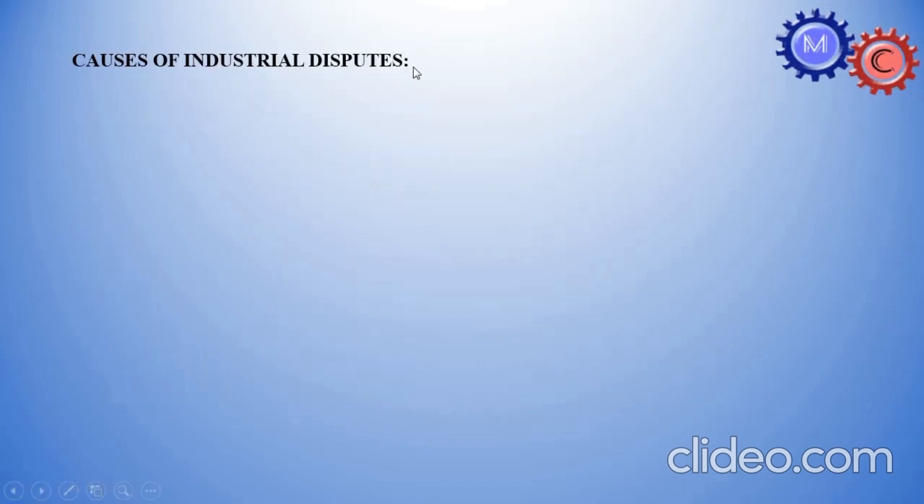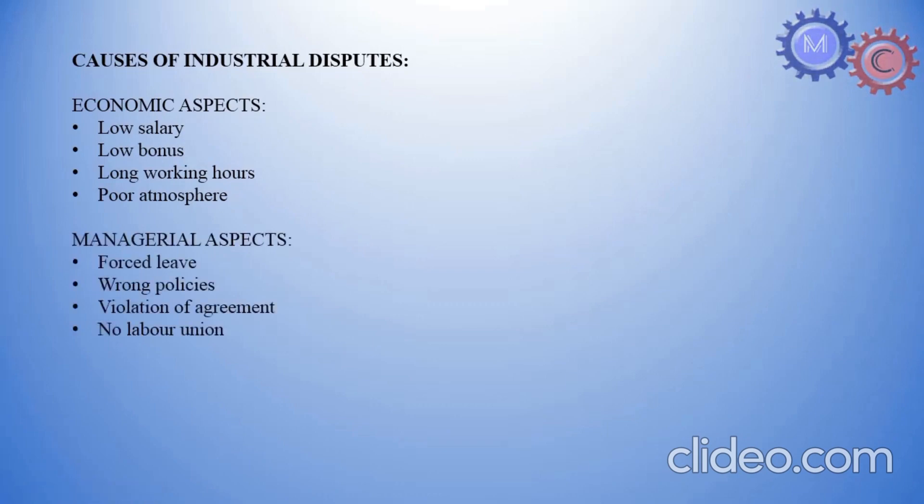Causes of industrial disputes. How industrial disputes occurs? Economic aspects: low salary, low bonus, long working hours, poor atmosphere. Managerial aspects: forced leave, wrong policies, violation of agreement, no labor union. Psychological aspects: strict discipline, ego clashes. It's all the industrial disputes.